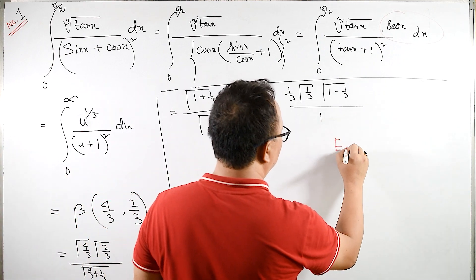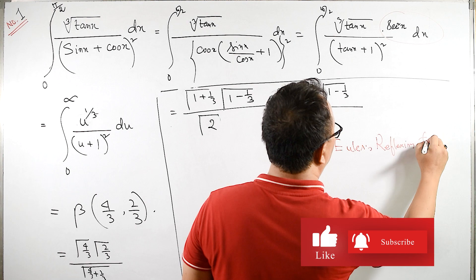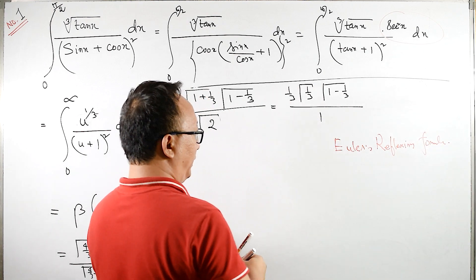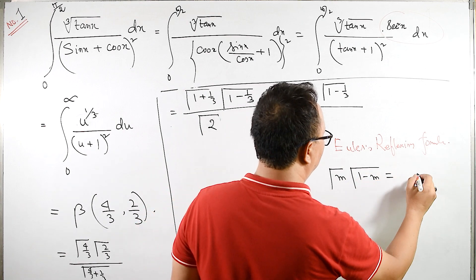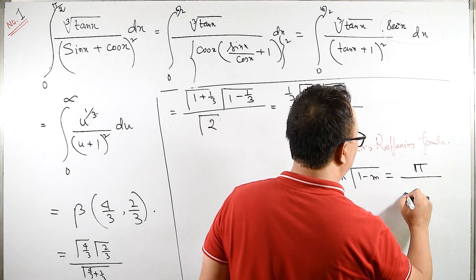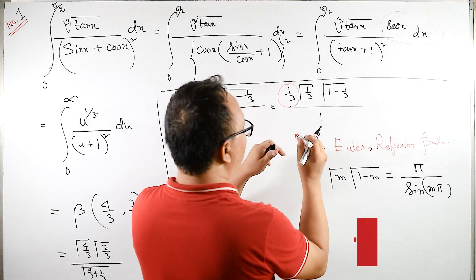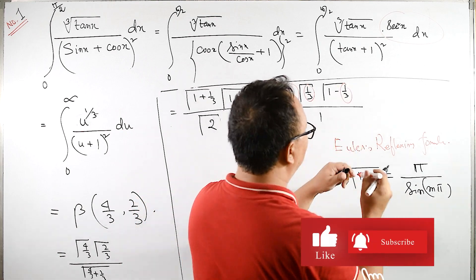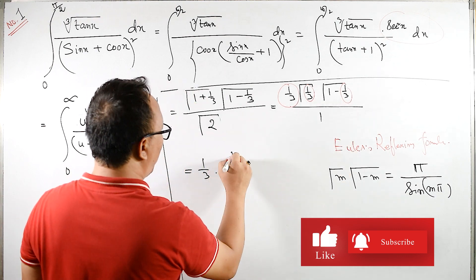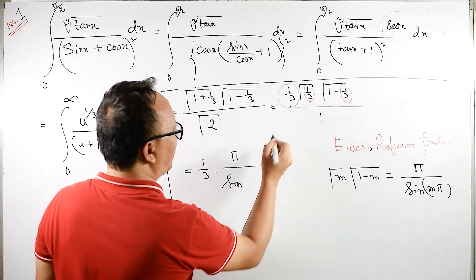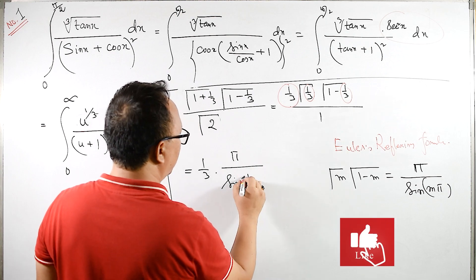Remember, we have Euler's reflection formula. What we have is gamma of m into gamma of 1 minus m is same as pi upon sine of m pi. Let us keep 1 by 3 outside. Here we have 1 by 3 as well as 1 minus 1 by 3. So this is same as 1 by 3. If I apply this formula, here pi upon sine of m is here 1 by 3 into pi. Or you can say pi by 3.